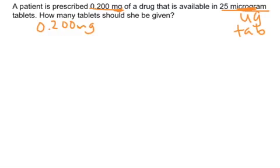The next step is to find any conversions that are in my problem or that I might need. So 25 microgram tablets — I can write that as a conversion: 25 micrograms per one tablet.